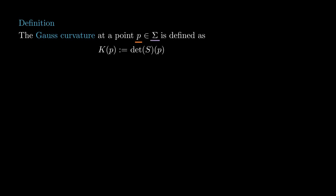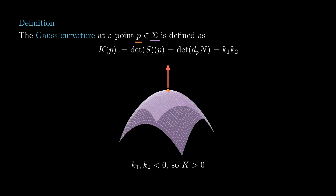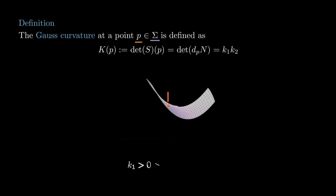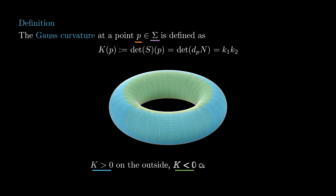Another important quantity we can extract from a linear map is its determinant. The Gauss curvature K is defined to be the determinant of the shape operator. This also equals the determinant of the derivative of n, and since the determinant of a linear map equals the product of its eigenvalues, K equals k1 times k2. On a surface that bends toward n in all directions, k1 and k2 are both positive, so K is positive. On a surface that bends opposite to n in all directions, k1 and k2 are both negative, giving K positive again. On a saddle surface, k1 is positive and k2 is negative, so K is negative. I'll leave it to you to check that a torus has positive Gauss curvature on the outside and negative Gauss curvature on the inside.